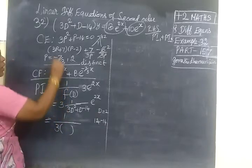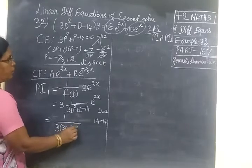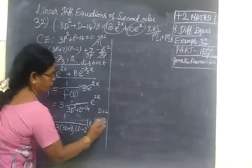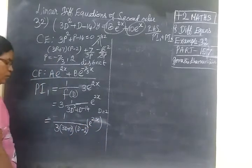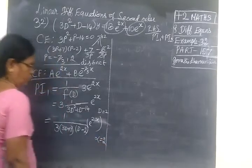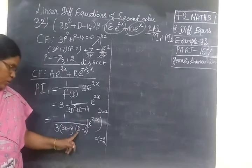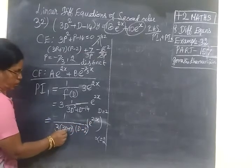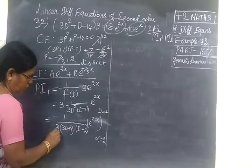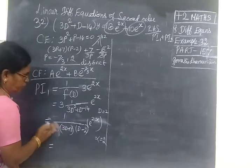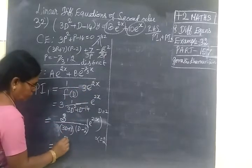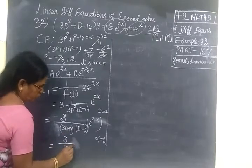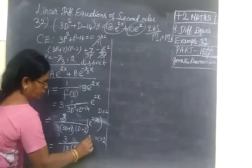So we have seen if the denominator is 0, you can split into factors. 3 times the factors we already have: 3d plus 7, then d minus 2, times e^(2s). Now here the alpha value equal to 2. For d you are substituting 2. If you substitute 2, it will be 0. So this you keep as it is. You don't substitute 2 there. Here you substitute for d: 3 times 2 is 6, plus 7 is 13. So 13 times 3.